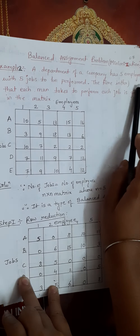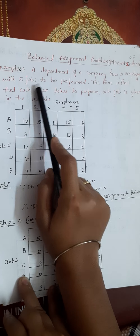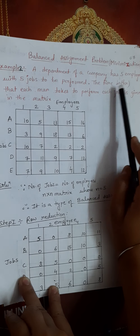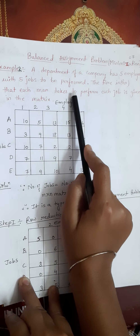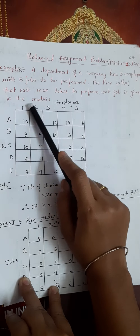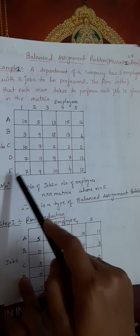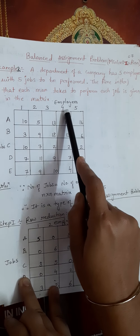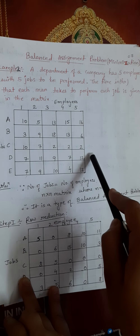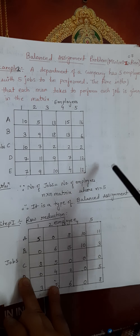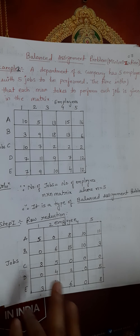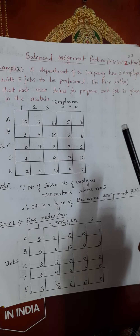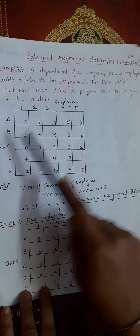A department of a company has 5 employees with 5 jobs to be performed. The time taken by each employee to perform each job is given in the matrix. We have to do such an assignment that we get a minimum cost or minimum time taken by the employees to do the job.